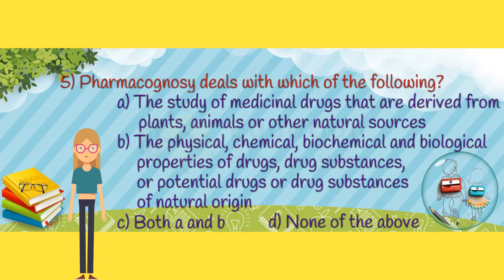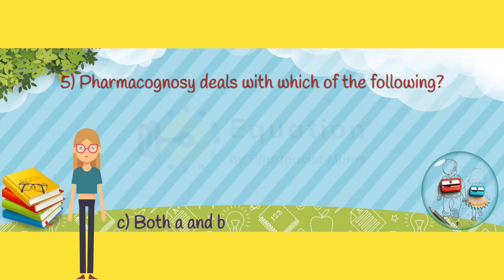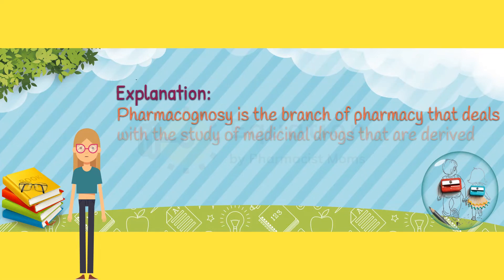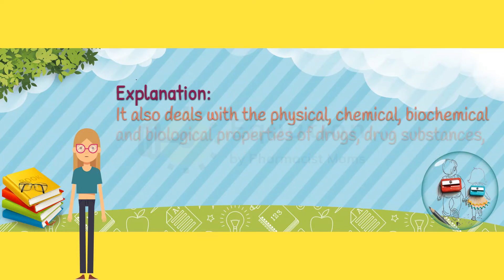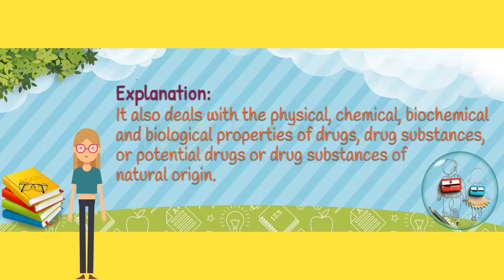The correct answer is Option C. Pharmacognosy is the branch of pharmacy that deals with the study of medicinal drugs that are derived from plants, animals, or other natural sources. It also deals with the physical, chemical, biochemical, and biological properties of drugs, drug substances, or potential drugs, or drug substances of natural origin.